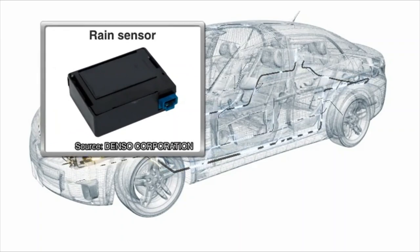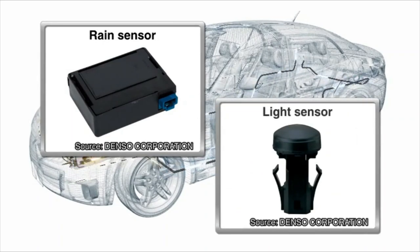Rain sensors detect rainfall and automatically trigger the windshield wipers. Light sensors assist safer driving by monitoring outdoor light and automatically adjusting the brightness of dashboard controls for optimum visibility.